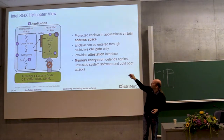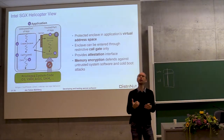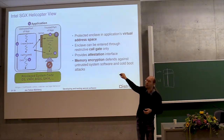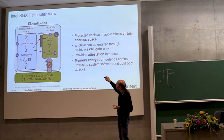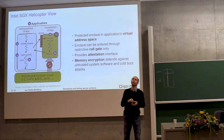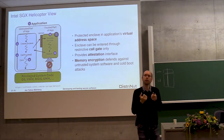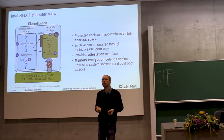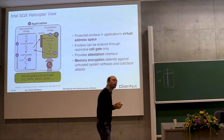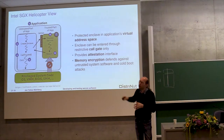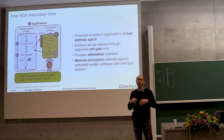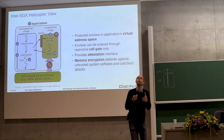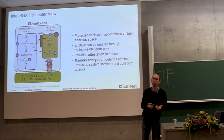What you do is you program an application, and within that application you have something like a shared library that is completely isolated from direct access through the rest of the application. The application creates what we call an enclave and only enters the enclave during execution through something like a call gate. This call gate is a very restricted way of entering the code executing in this part, which defines very rigorously what parameters can be passed and how they are supposed to be checked.